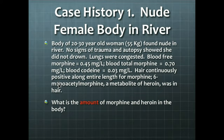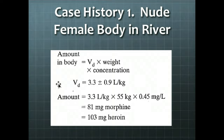Case history one: nude female body in the river. A body of a 20 to 30 year old woman, 55 kilograms in weight, was found nude in the river. No signs of trauma and autopsy showed she did not drown. The lungs were congested. Blood free morphine was 0.45 mg/L, blood total morphine was 0.7 mg/L, and blood codeine was 0.03 mg/L. Hair was continuously positive along the entire length for morphine as well as 6-monoacetylmorphine, a metabolite of heroin. We will answer the question of the amount of morphine and heroin in the body when we return to this case history.